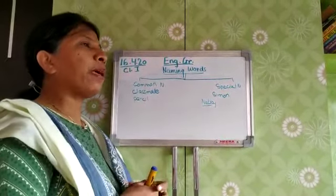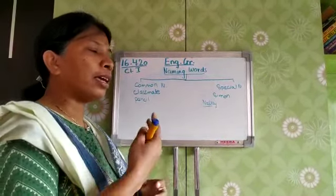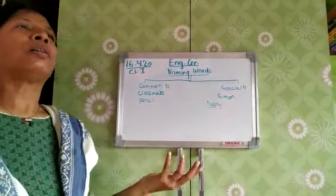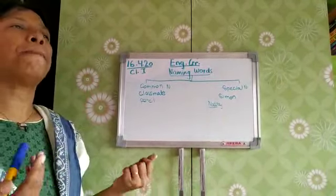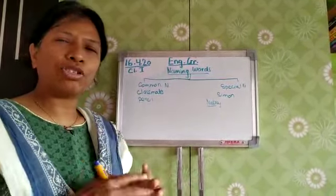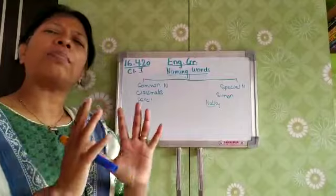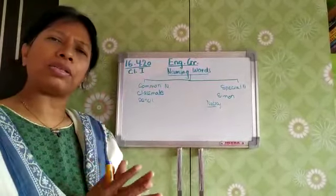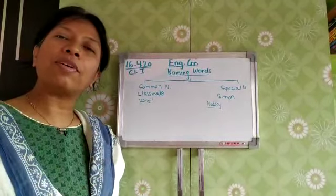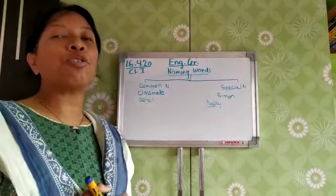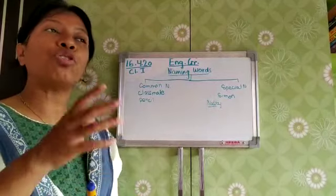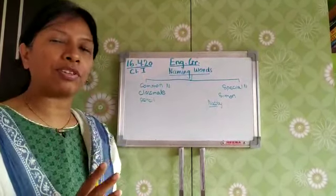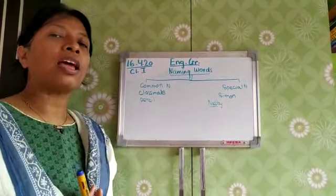Similarly, if I tell you to name a place — a park — generally a park, it is like any park you can say. But if a name is given, like Nehru Park, then you know which park it is. A special name is given to that.